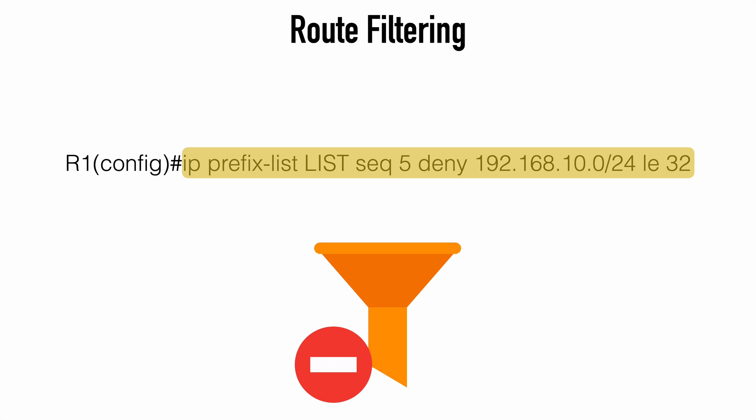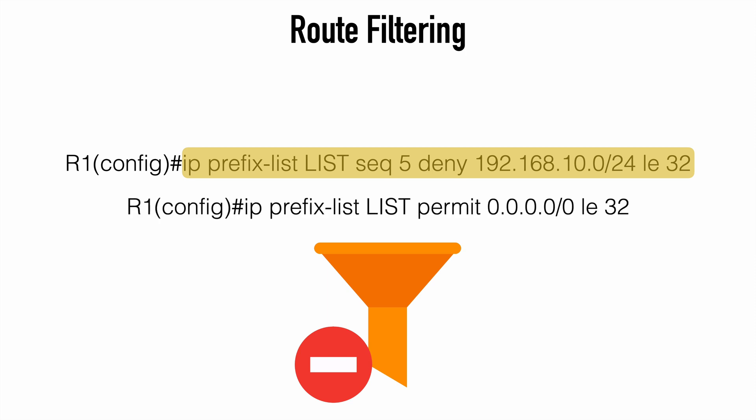You don't have to specify GE or LE, and if you don't, then the prefix list is going to look for an exact match instead. And at the end, of course, we would need to make sure we allow all other traffic, just as we do with an access control list. Because remember, we have an implicit deny any statement at the end. So with a prefix list, that would look like an all-zeros network with a slash 0 mask, matching all the way up to a slash 32 mask. So we would say LE less than or equal to 32.